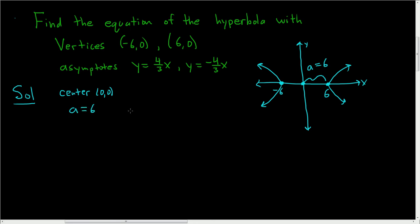Now the formula for the asymptotes of a hyperbola that opens left and right is y equals plus or minus b over a times x minus h plus k. Where h, k is the center of the hyperbola.